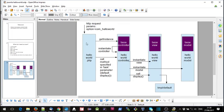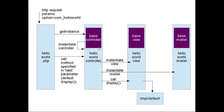Going back to the picture, with the search component: we got the base instance, called the search method first which set things up and called a redirect. It came in again with option=com_search; the second time there was no task= so it just called display — and we saw that through the echo statements that were output. That's a lot of heavy stuff, but hopefully it's shed a little bit of light on what's going on with Joomla. Thanks for listening.